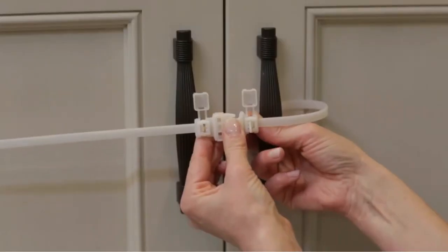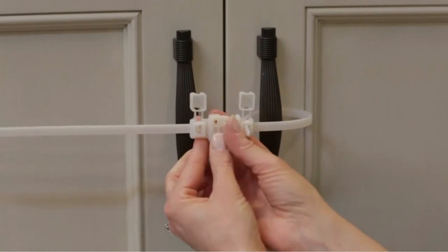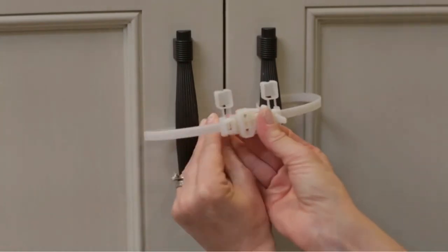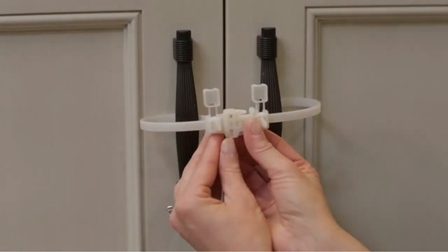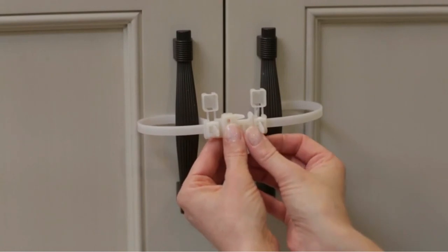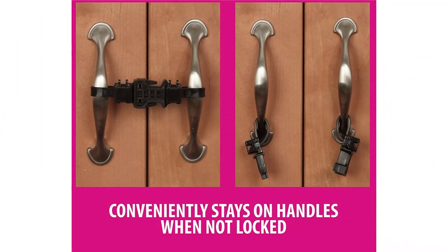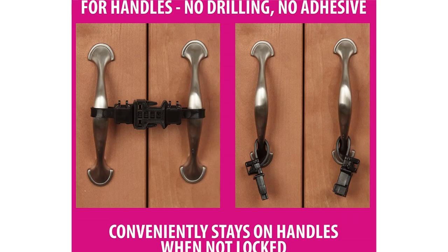Simple zip-tie strap is military-grade and tested to over 120 pounds. They take just seconds to install and remain permanently attached to your cabinet door handles so they are always there when you need them. Use them for as long as needed, then just cut off to remove.